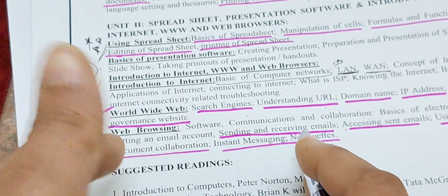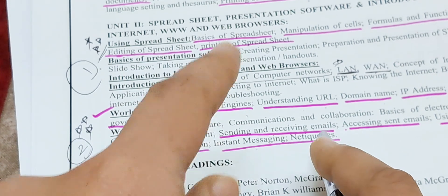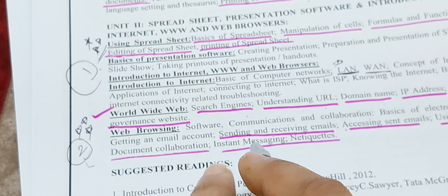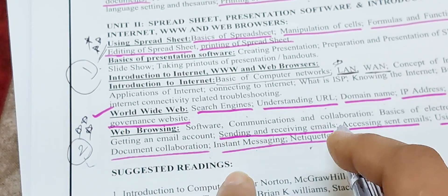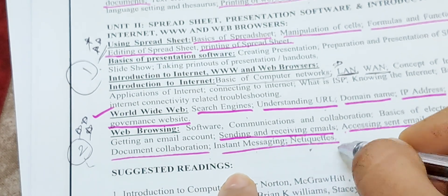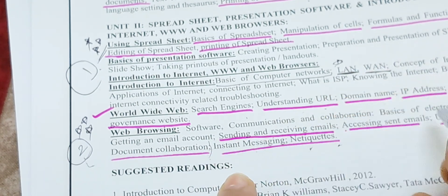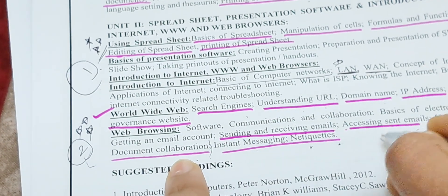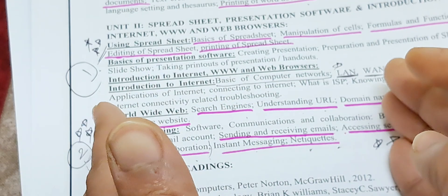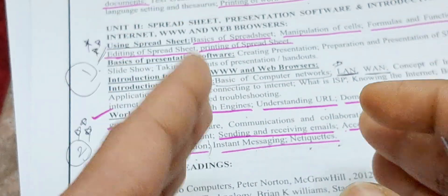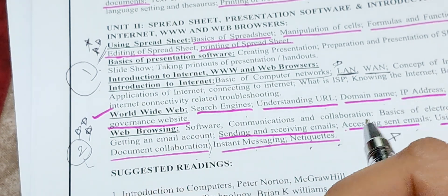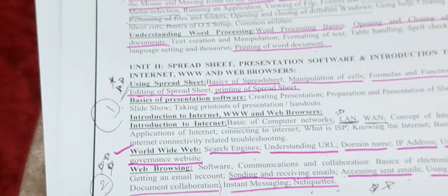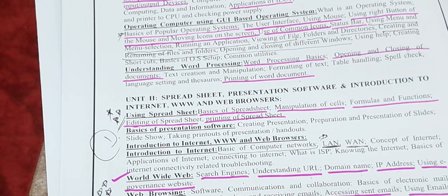For email topics, you need to learn: how to send and receive emails — the procedure for sending and receiving is important. Then accessing sent emails, using email for document collaboration, instant messaging, and netiquette. If you don't have time, leave instant messaging and netiquette — learn up to sending and accessing sent emails and document collaboration. These are very most important.